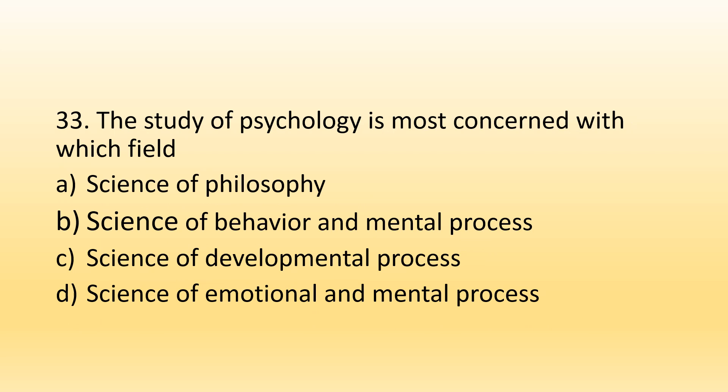Number 33. The study of psychology is most concerned with which field? Option A, Science of philosophy; Option B, Science of behavior and mental process; Option C, Science of developmental process; Option D, Science of emotional and mental process. The right option is Option B, Science of behavior and mental process. Mental processes basically include cognition, thinking, and perception — these are all complex processes that psychology deals with, along with behavior.